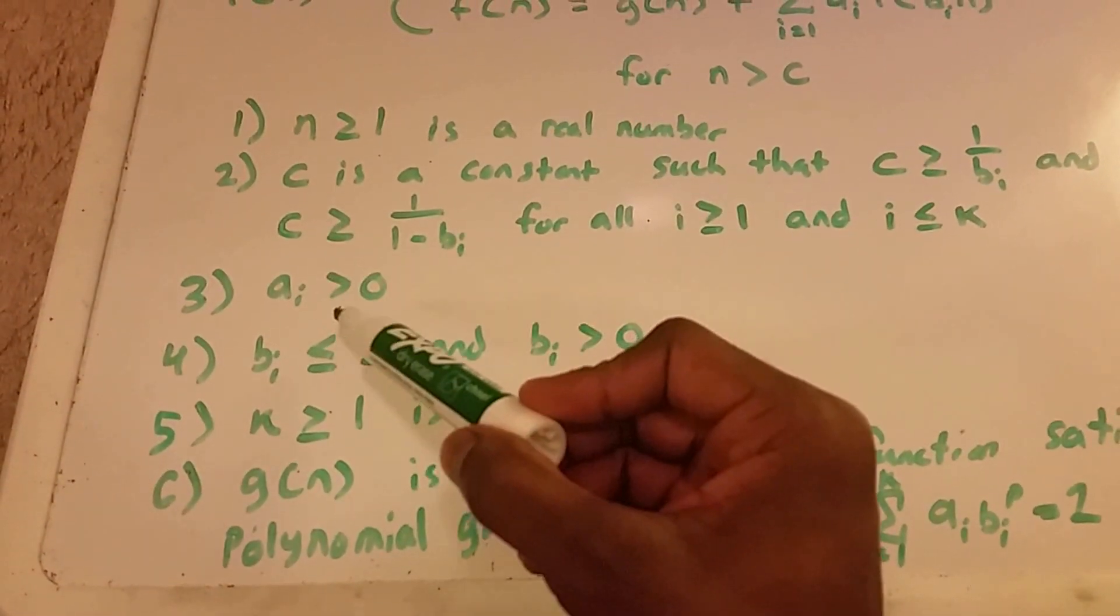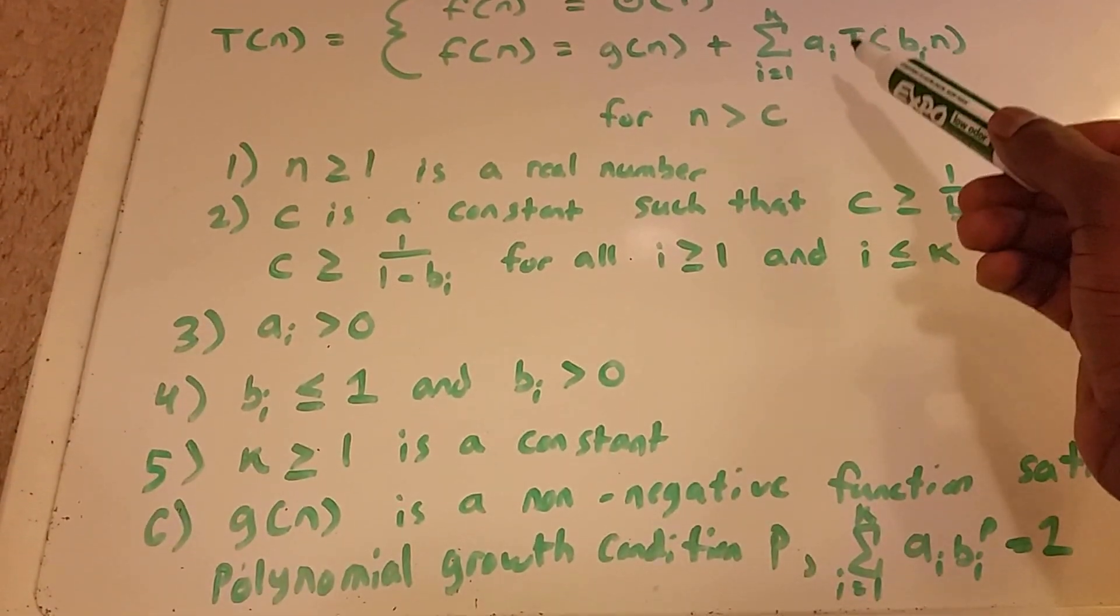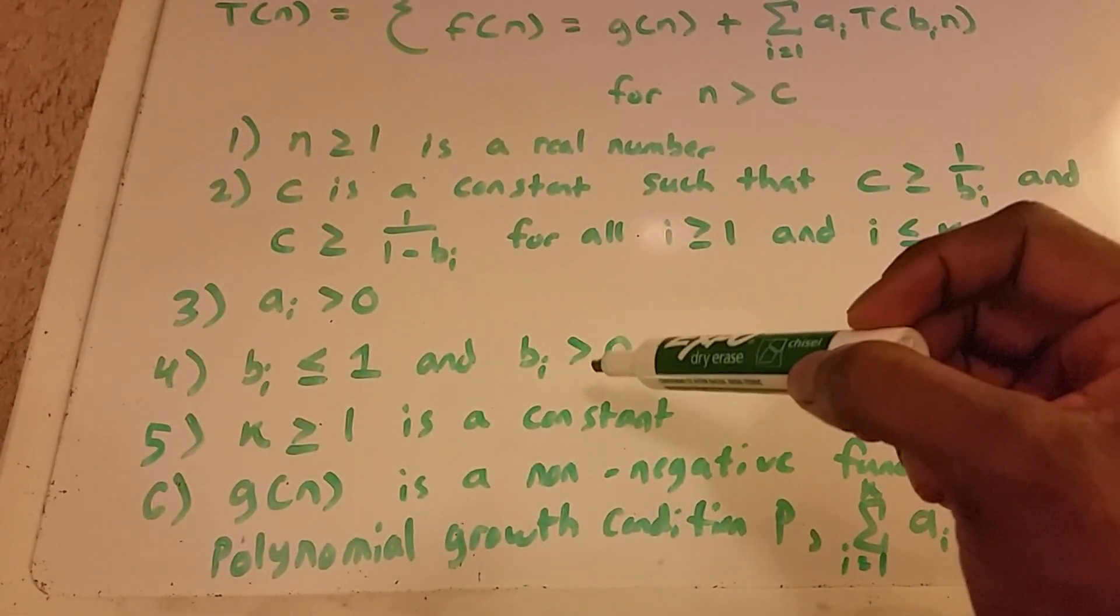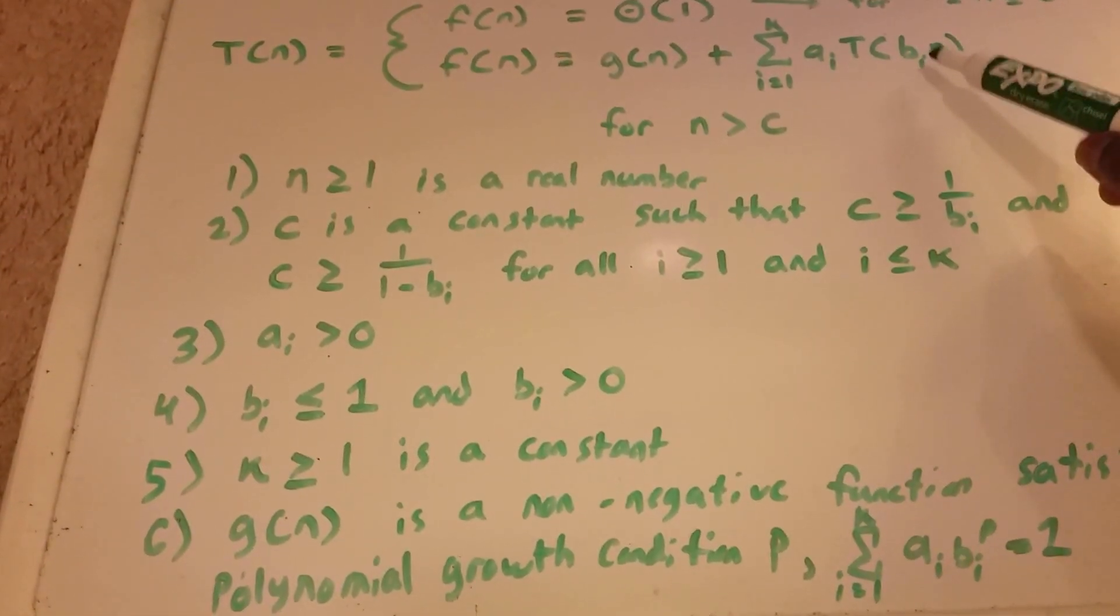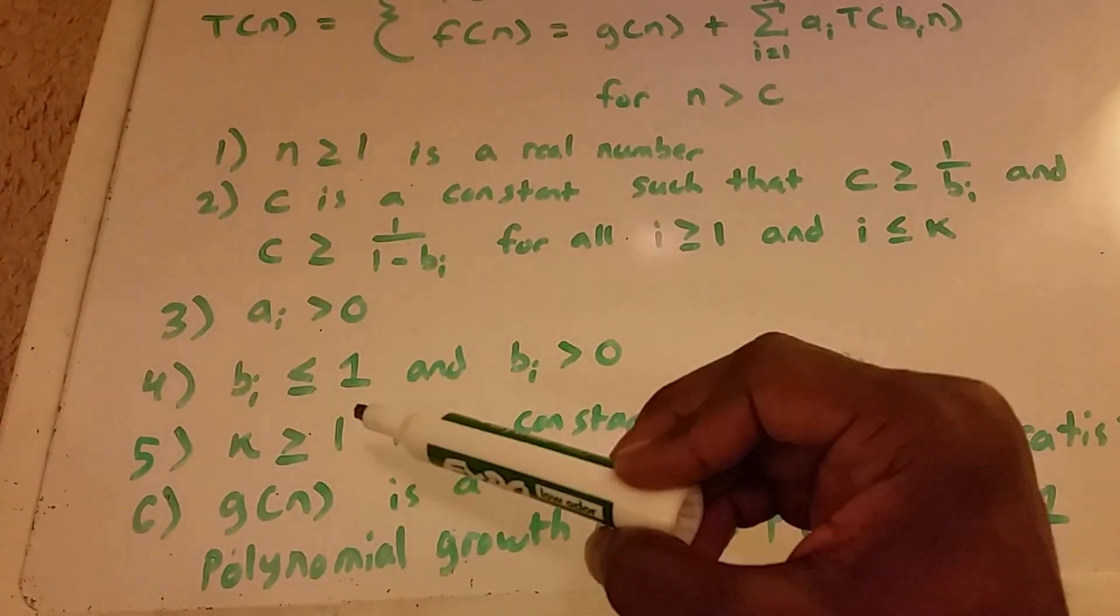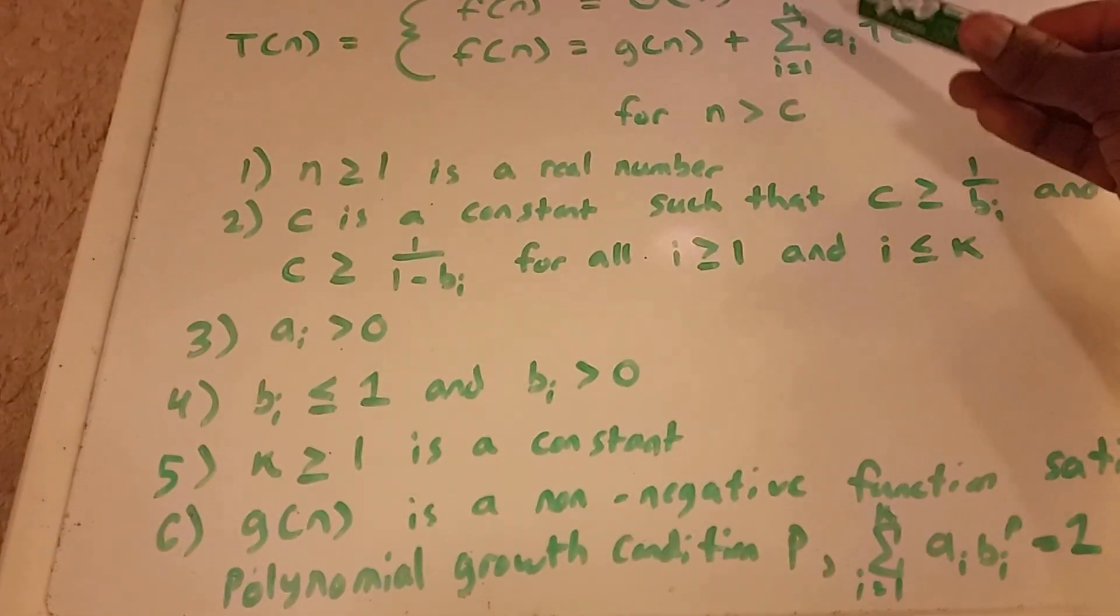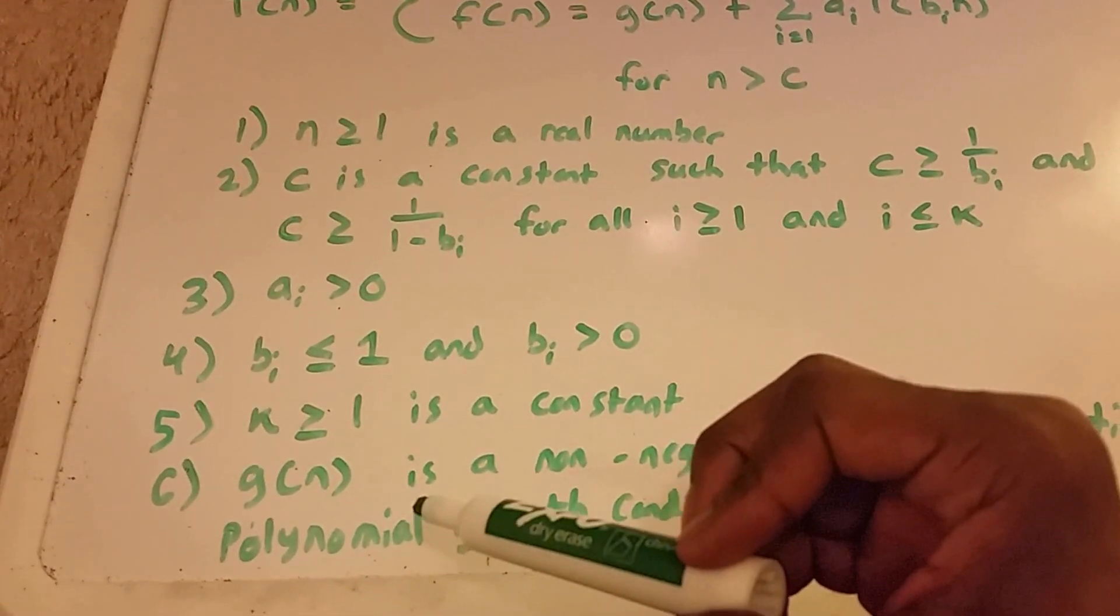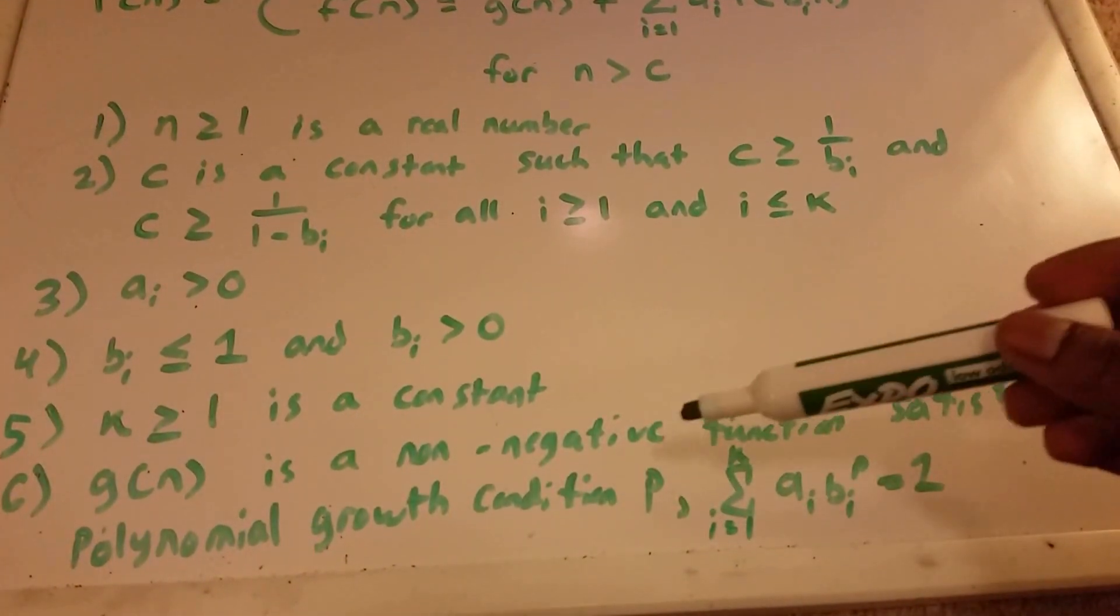Three, a subscript i must be greater than 0. Our b subscript i must be less than or equal to 1, and our b subscript i must be greater than 0. So b subscript i is going to be some value between 0 and 1. And our k is greater than or equal to 1. It's a constant, of course, because our summation is going to go up to some constant k.